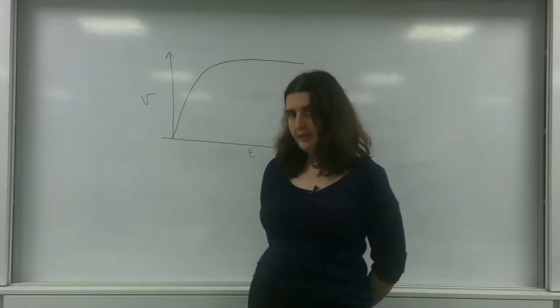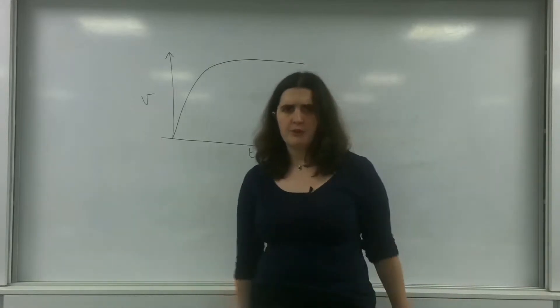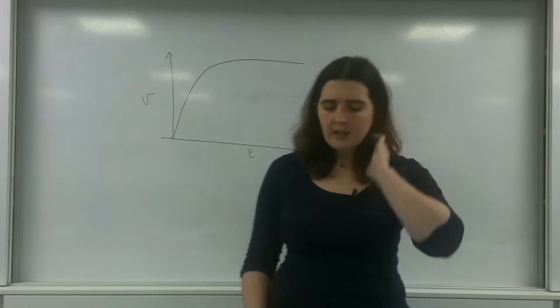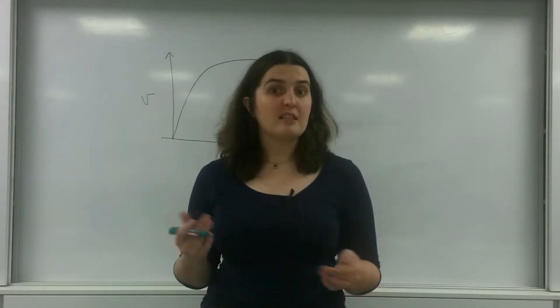Now I have a graph here that is actually representing terminal velocity. And I'm going to explain the process of what terminal velocity is. And I'm going to use an example of a parachutist.